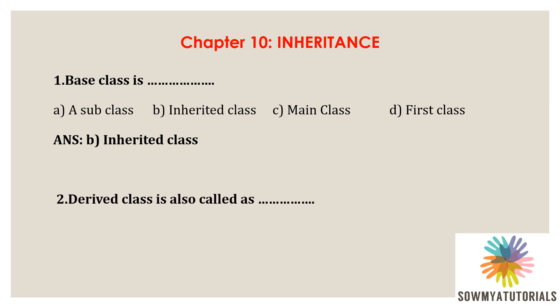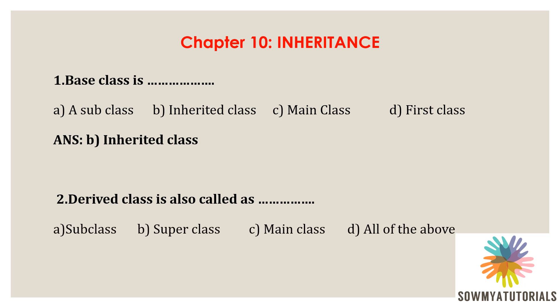Second question: derived class is also called as — options are subclass, super class, main class, and all of the above. The correct answer is option A, subclass, because it is a class that inherits the properties from the base class, so we can call it a subclass.